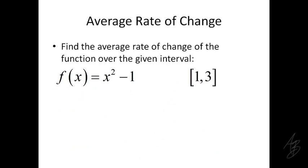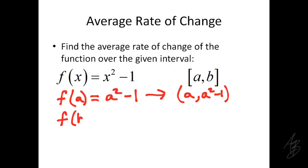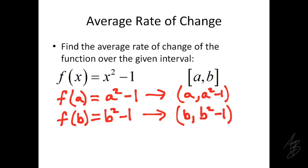Let's look at the same function but generalize it a little bit, using variables for the endpoints of the interval. We'll evaluate the function at the left endpoint: f of a equals a squared minus 1, which tells us that the point (a, a squared minus 1) is on the function — that's our left endpoint. And evaluating at the right endpoint: f of b equals b squared minus 1, so the point (b, b squared minus 1) is on the function.